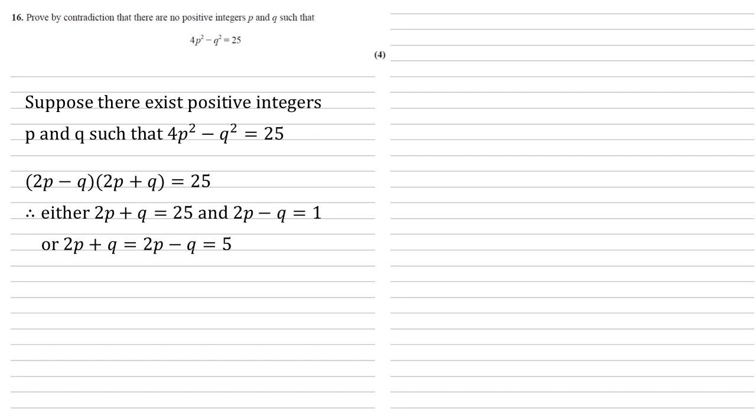Our second case is that both brackets are equal to 5. So let's look at these separately. Case 1: 2p + q = 25 and 2p - q = 1. We've got two simultaneous equations here.